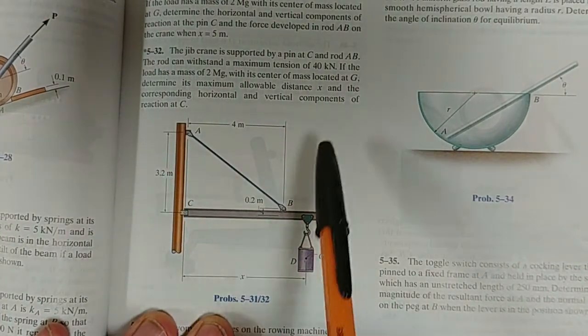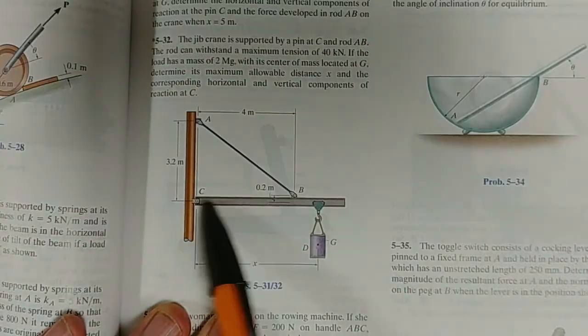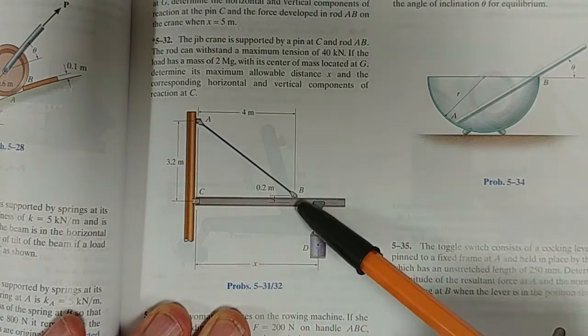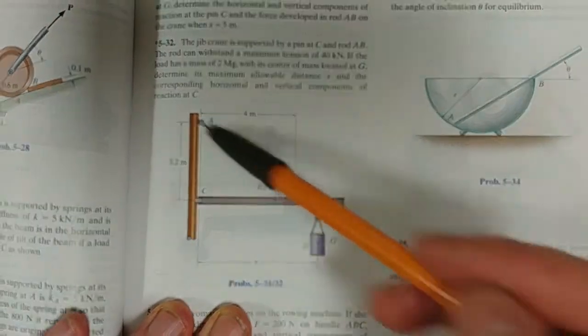We have this jib crane, so essentially what we have here is this cantilever beam, and it's being supported by this rod AB.